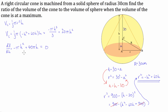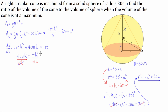Moving the negative pi H squared to the other side gives us 40 pi H equals pi H squared. Dividing both sides by pi H, the pi H terms cancel, leaving us with H equals 40.